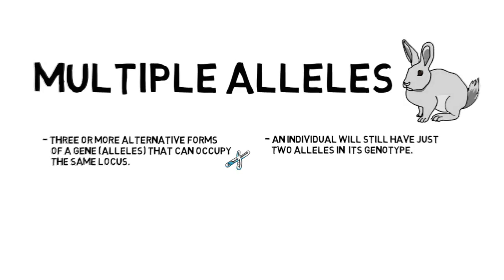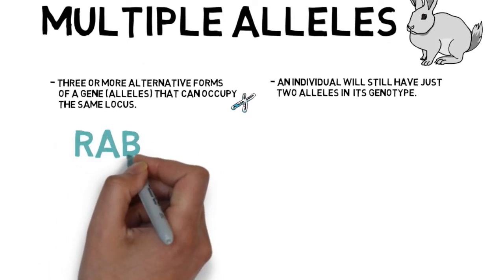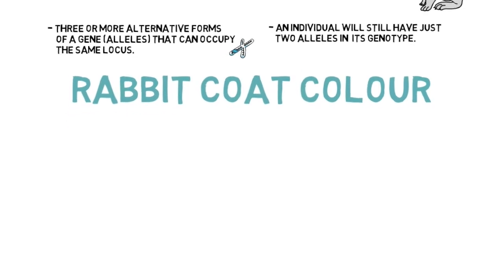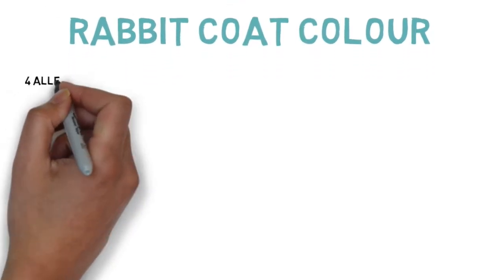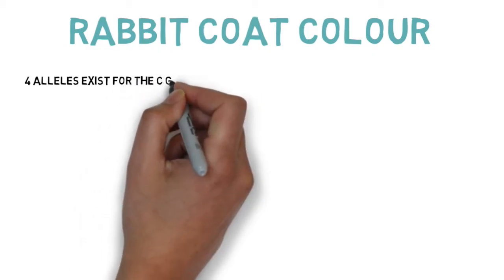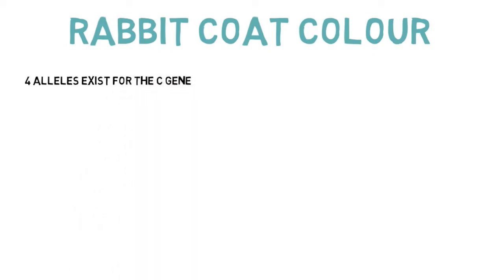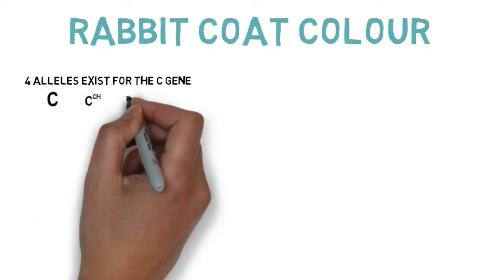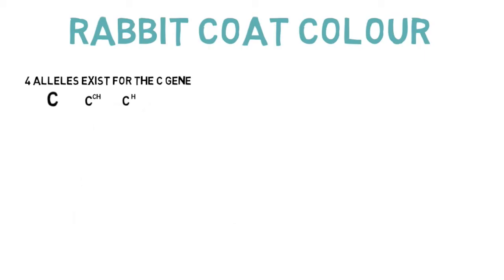To show you this, we will look at rabbit coat color. For rabbit coat color, four possible alleles exist. So instead of the two alleles that you are used to, there are four.